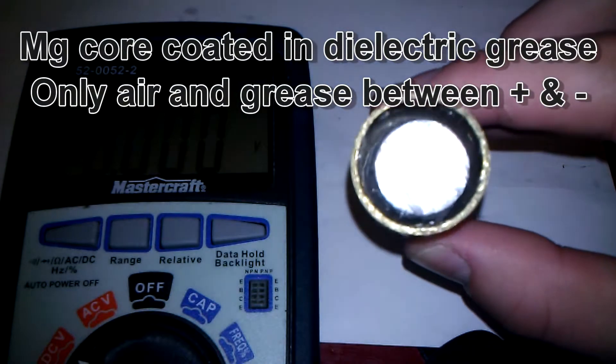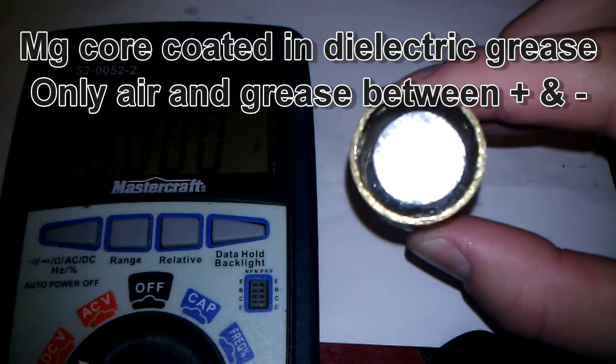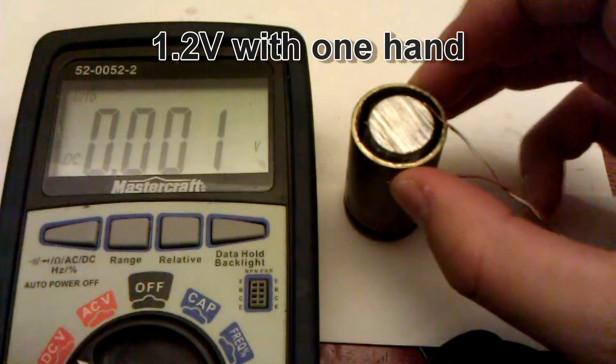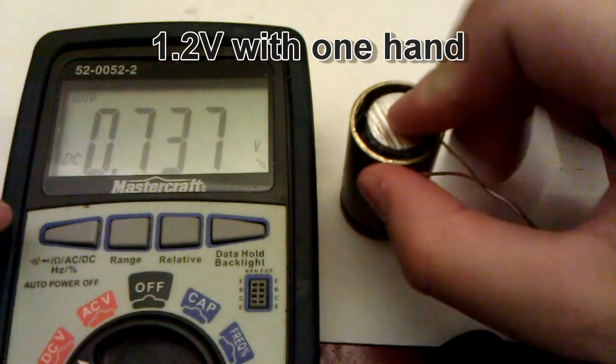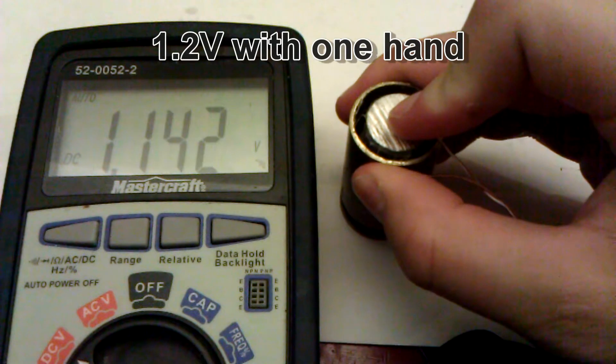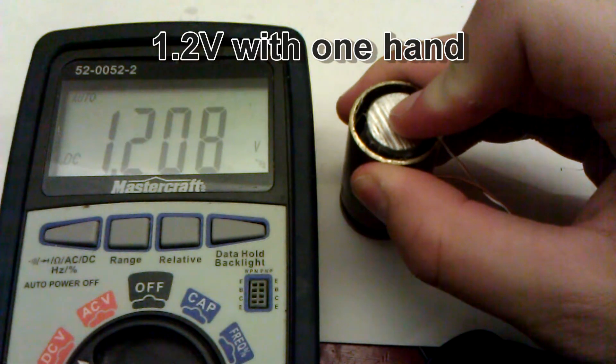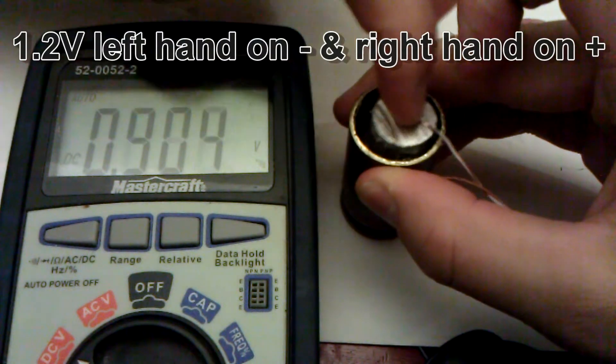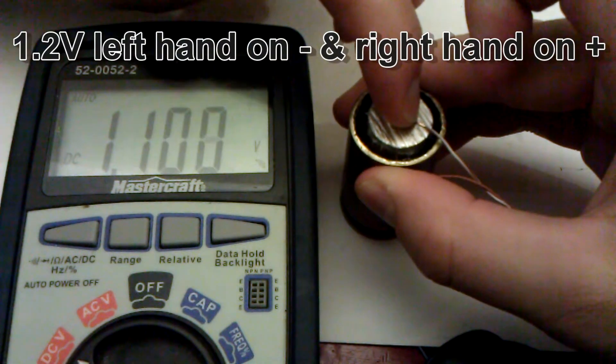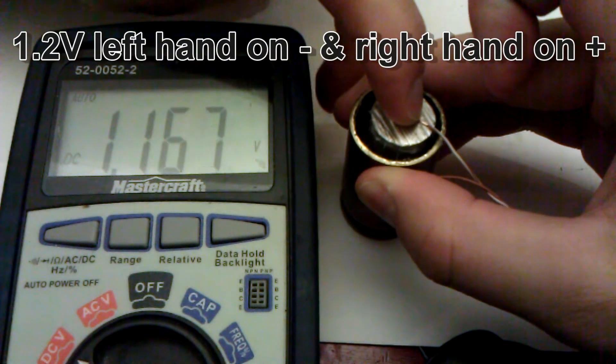So when I was building the crystal cells initially, I noticed this interesting voltage difference when I was touching the anode and cathode with different fingertips and either my left hand or my right hand, and you can see like 1.2 volts, and then only like 1 volt, but it goes up to 1.2.